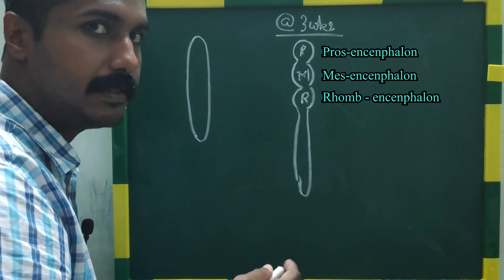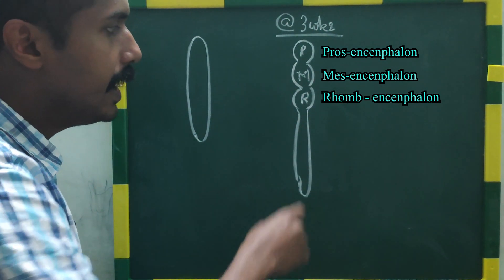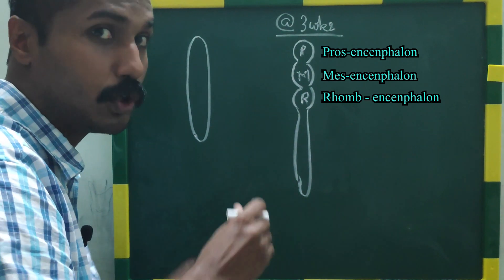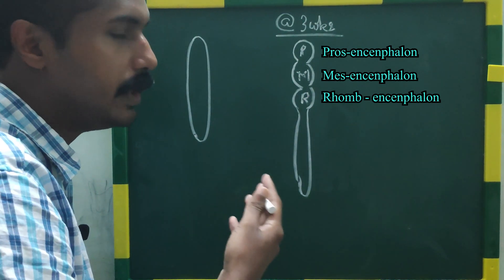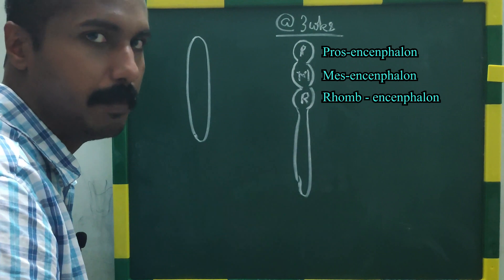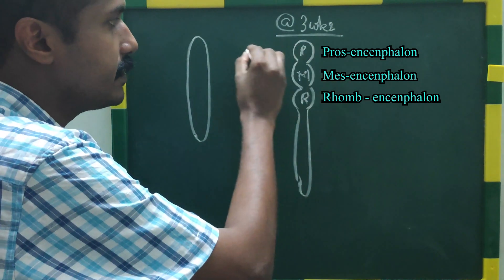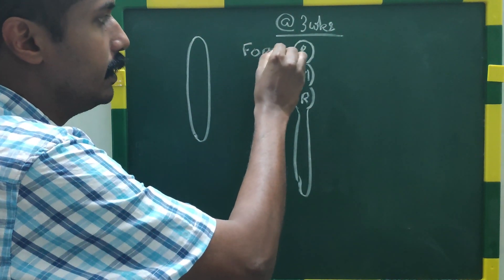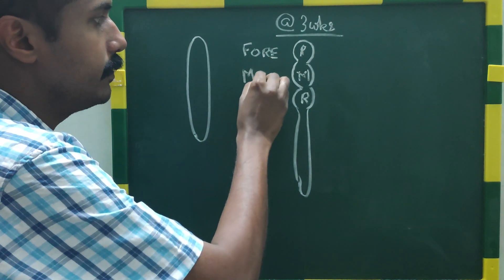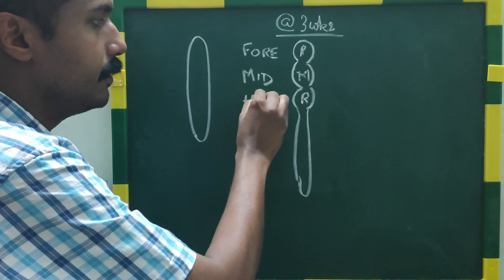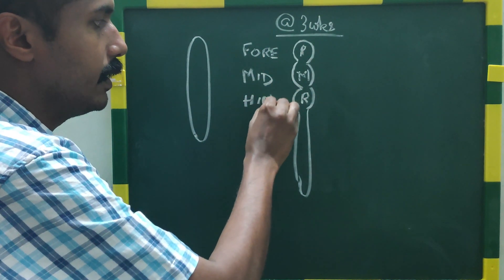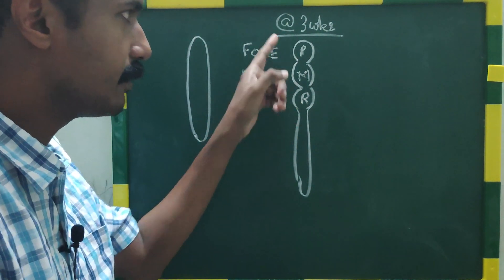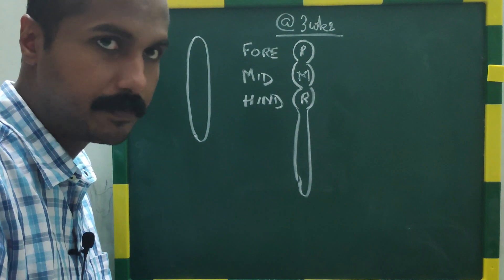Mesencephalon means midbrain, and rhombencephalon actually means rhombic brain, but we can understand that as hindbrain. So this is the forebrain, this is the midbrain, and this is the hindbrain — the prosencephalon, mesencephalon, and rhombencephalon — and this occurs at 3 weeks of age.